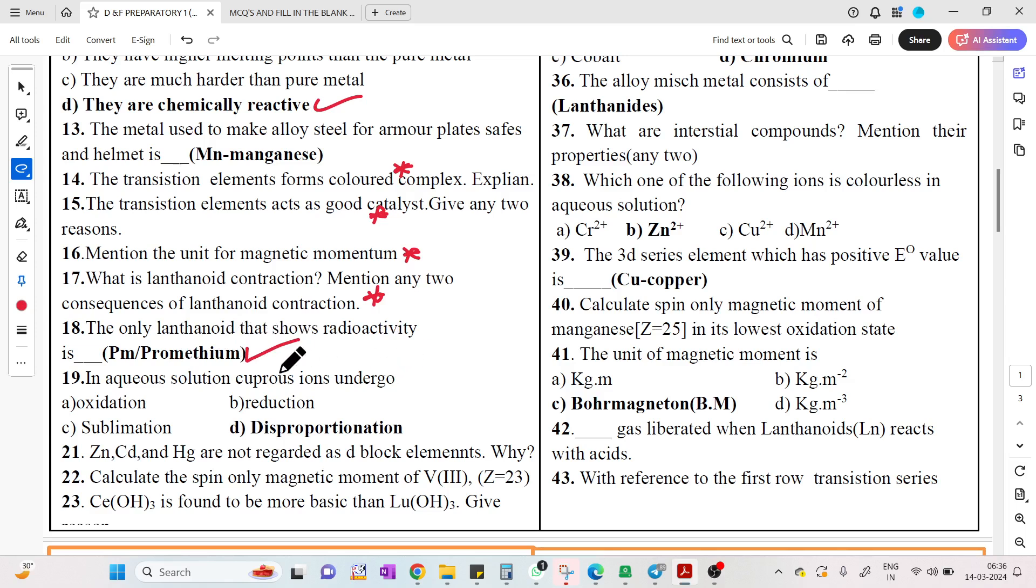In aqueous solution, Cu+1 will undergo disproportionation reaction. Zinc, cadmium, mercury are not regarded as d-block elements. Why? The reason is these are not having partially filled d-orbitals in its common oxidation state as well as in its ground state.